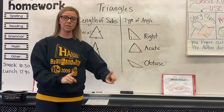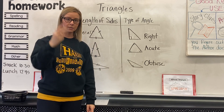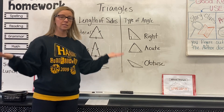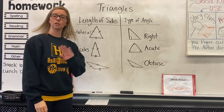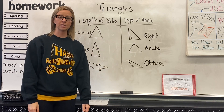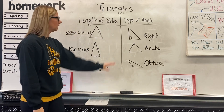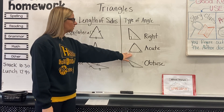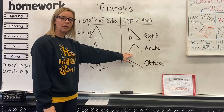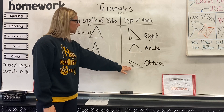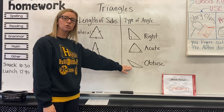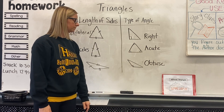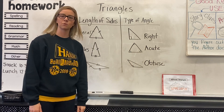Isosceles triangle: two congruent sides. Scalene triangle: no congruent sides. Then we have our right triangle with a right angle, an acute triangle with three acute angles, and an obtuse triangle with at least one obtuse angle.